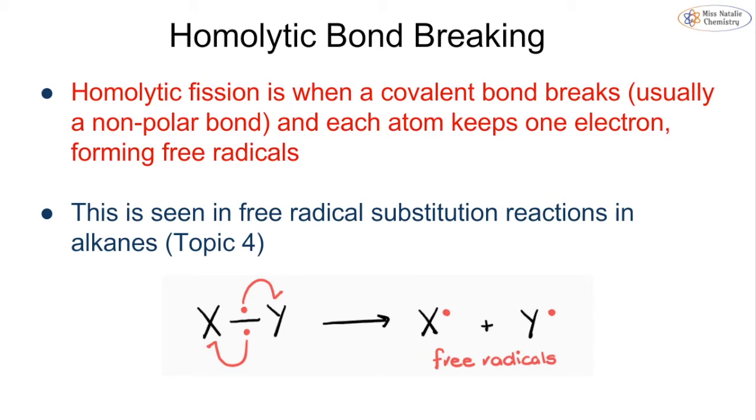Back in topic 4 and 5 we looked at different types of bond breaking. The first is homolytic fission, where we usually have a nonpolar bond or very similar electronegativities. When a covalent bond breaks, each atom keeps one electron and we form a free radical. We've seen this in free radical substitution reactions back in topic 4. We get the breaking of this bond usually by UV light and form our free radicals. A free radical has an unpaired electron.